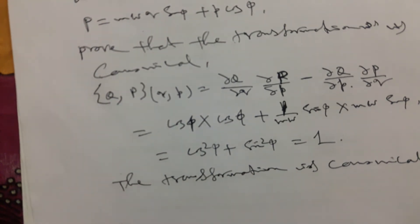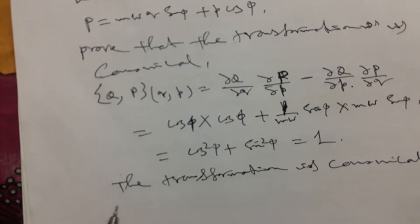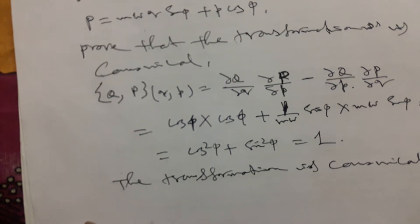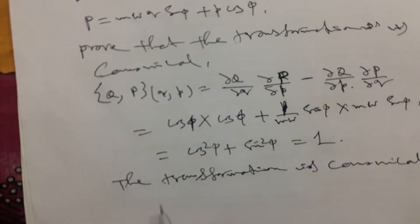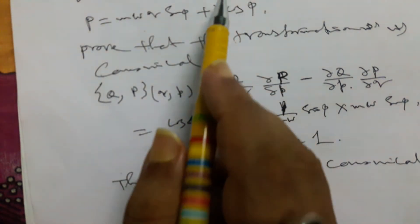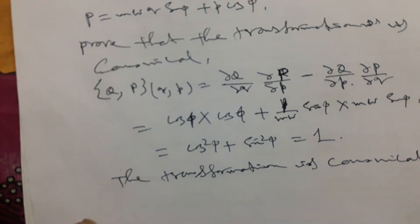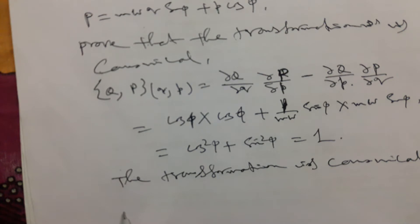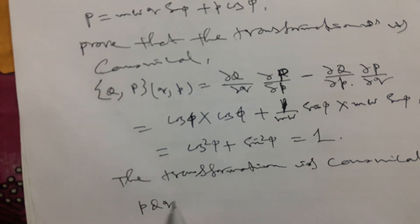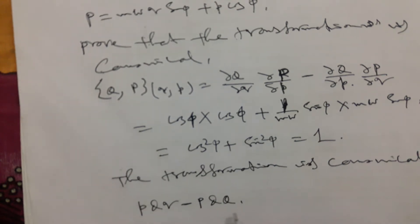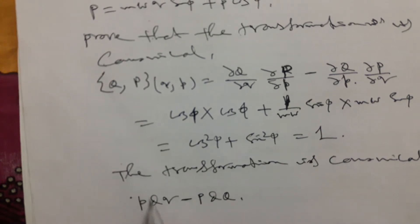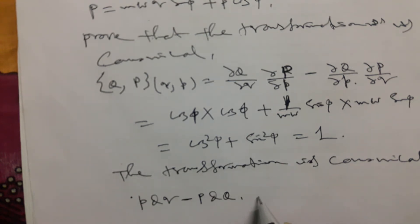Now we have to find the first generating function. We require some conditions to calculate it. The quantity we need to compute is p dq minus capital P dQ, so we need expressions for small p and capital P.